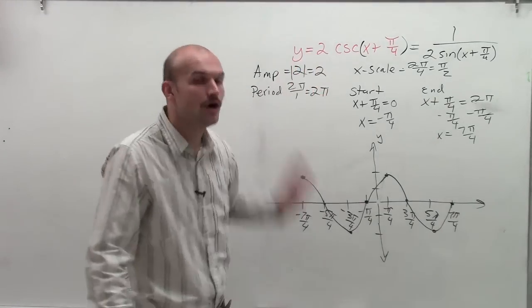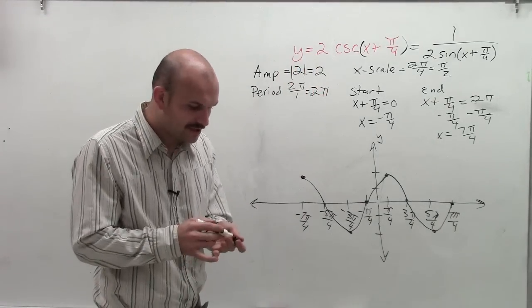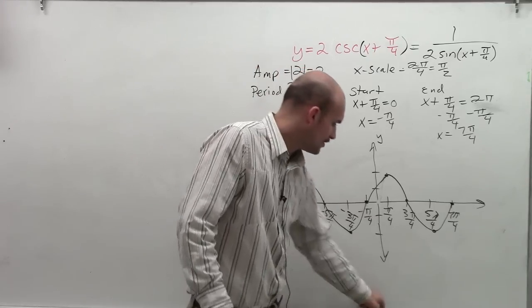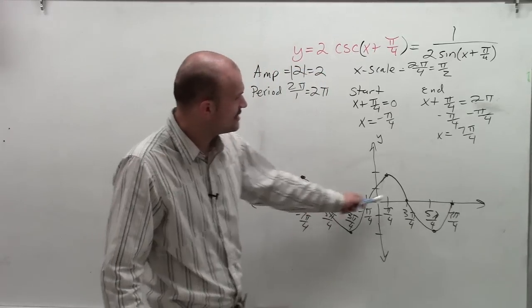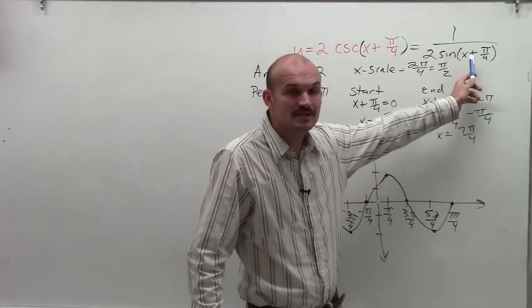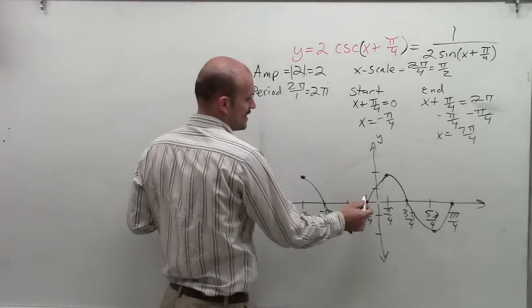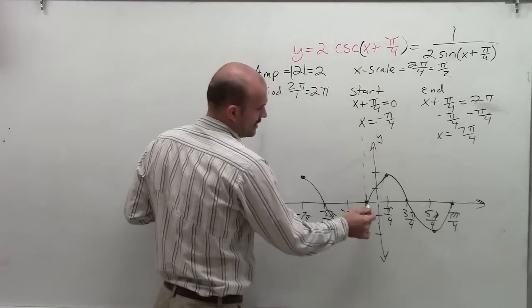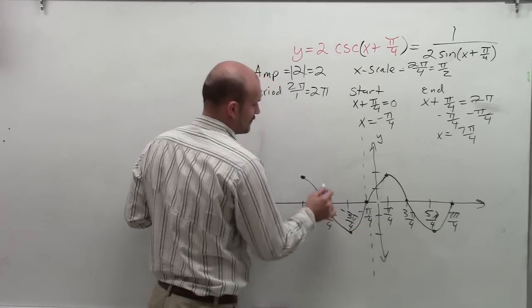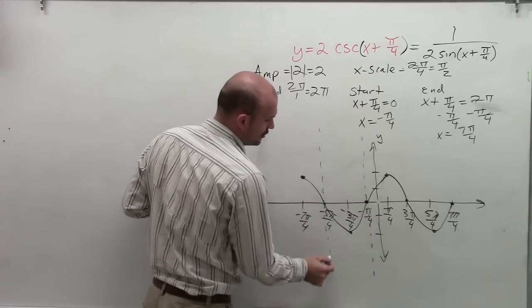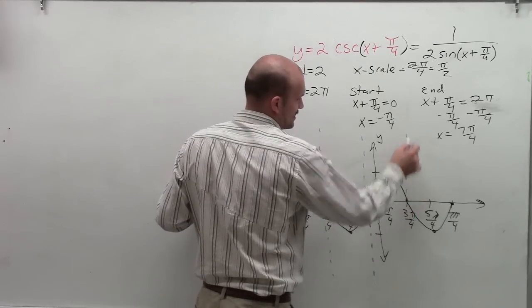But remember, we're trying to graph the cosecant function. So in graphing the cosecant function, one thing I notice is on the sine function, at each one of these x-intercepts, my function is equal to 0. So therefore, when graphing the cosecant function, these are now going to be asymptotes of my graph. So I'm going to graph a vertical line at every x-intercept.